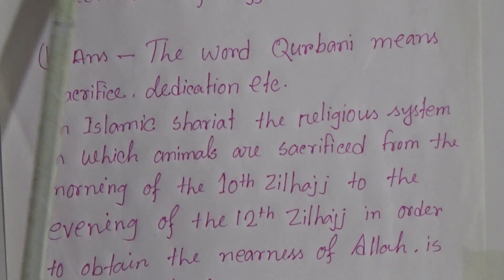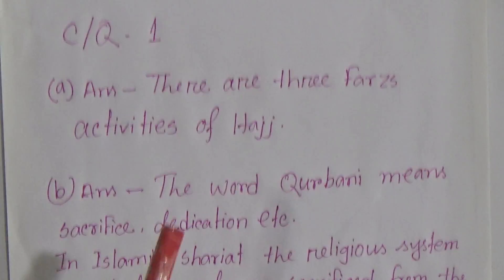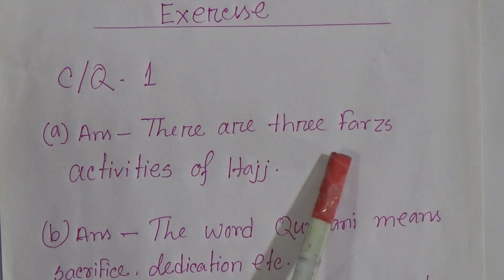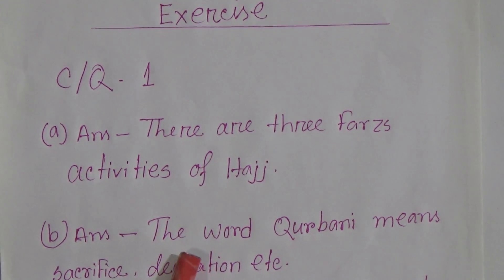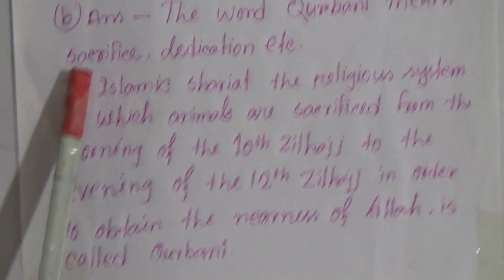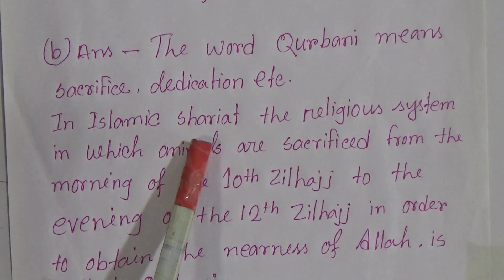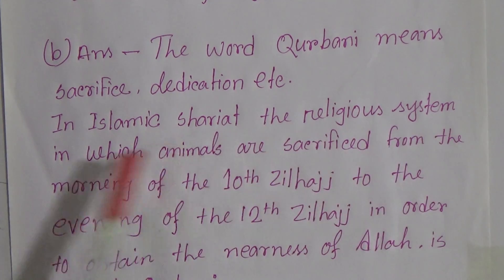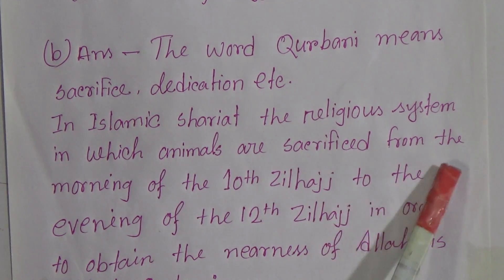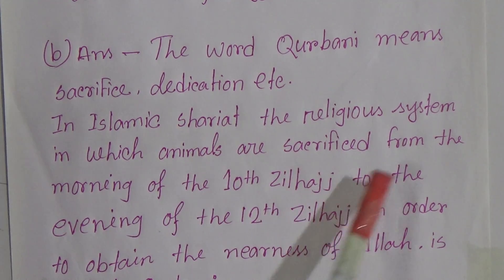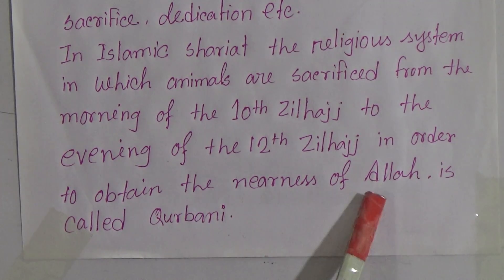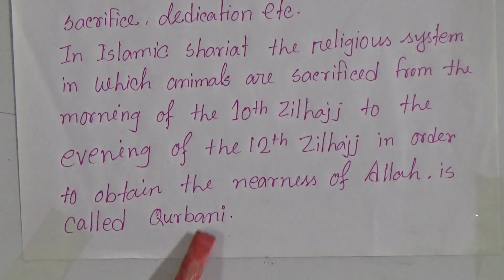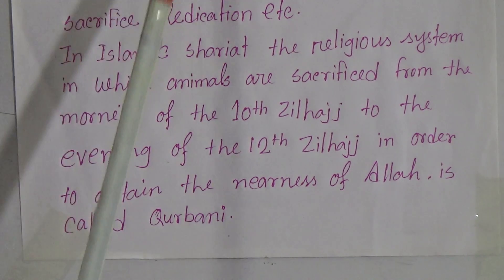Let's start our topic. This is CQ 1. Question A is: how many fargs are there in Hajj? Answer is, there are three fargs — activities of Hajj. For answer B, the word Kurbani means sacrifice, dedication, etc. In Islamic Shariah, the religious system in which animals are sacrificed from the morning of the 10th Zilhajj to the evening of the 12th Zilhajj in order to obtain the nearness of Allah is called Kurbani. CQ A and B are done.